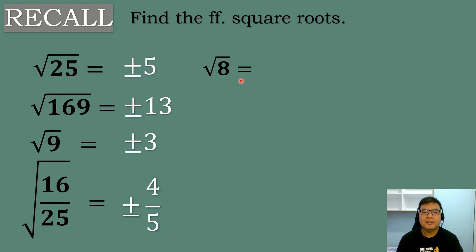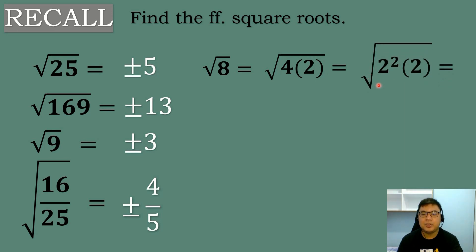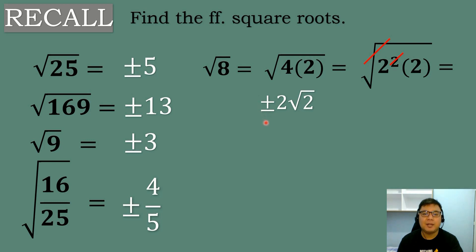Next: What is the square root of 8? There is no perfect square root of 8, so we need to get the factors of 8. The factors are 4 times 2, where 4 is a perfect square. We rewrite 4 as 2 squared, so that the exponent 2 and the square root symbol cancel out, leaving positive 2 outside. So the answer is positive or negative 2 square root of 2.